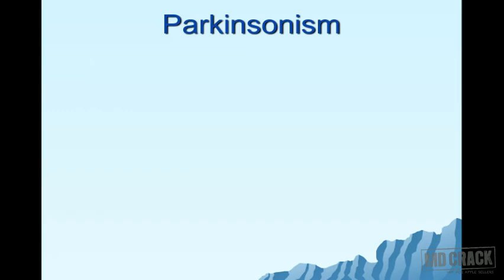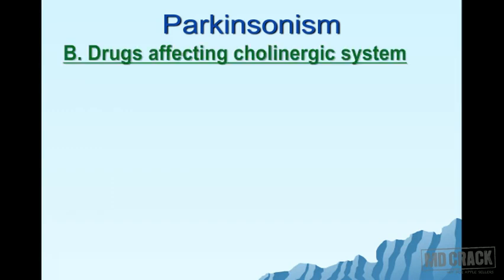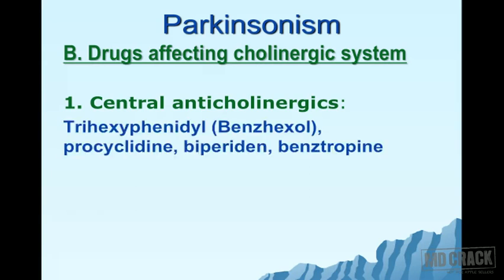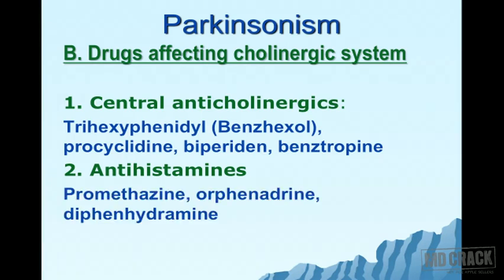Amantadine acts as a dopamine facilitator, stimulating dopaminergic transmission. For the cholinergic system — since there is acetylcholine excess — central anticholinergic drugs are used, most importantly trihexyphenidyl (also called benzhexol), along with procyclidine, biperiden, and benztropine. Antihistaminic H1 agents with predominant anticholinergic properties include promethazine, orphenadrine, and diphenhydramine.